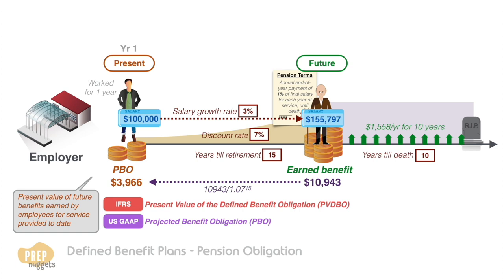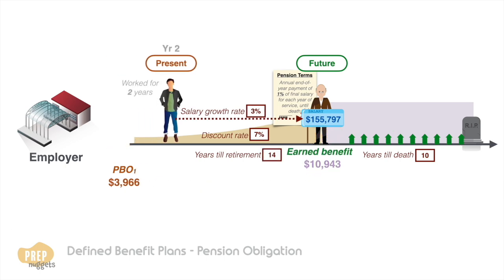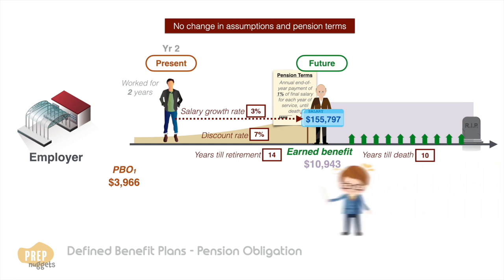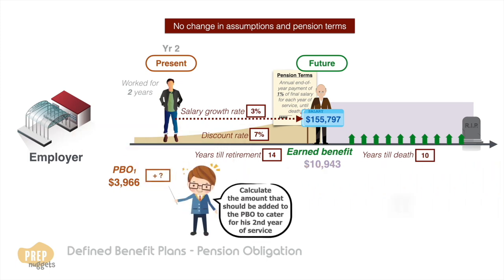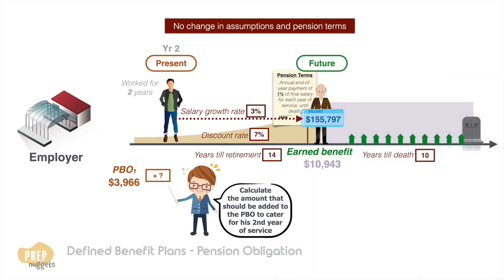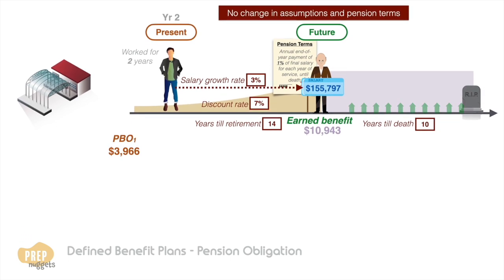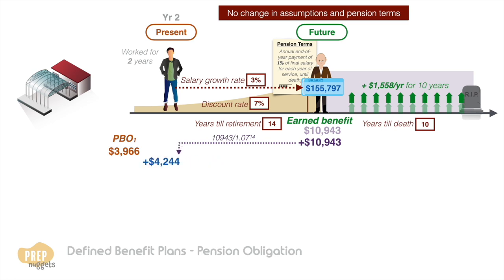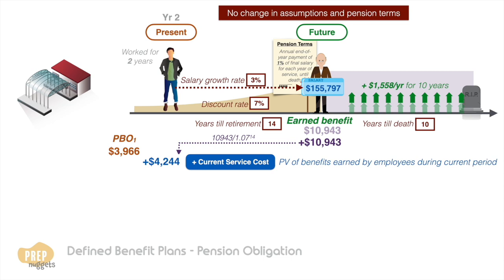Let's say the employer puts in this amount into the trust fund and the employee worked a second year, so he's earned more retirement benefit. Assuming there's no change in assumptions and the terms of the plan, since the assumptions and pension formula have not changed, the addition to his retirement benefit should be the same as the first year, which means the amount of earned benefit added at retirement is also the same. This time we discount the amount by 14 years instead, so the present value is $4,244. We add this to the PBO. This is termed the current service cost, which is defined as the present value of benefits earned by the employees during the current period.